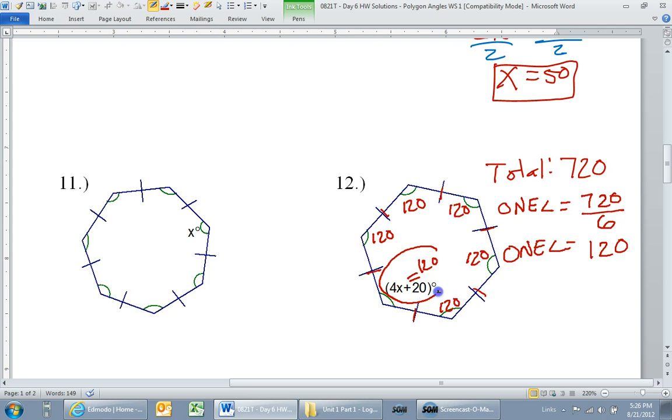Focusing on that, that leads us to an equation. 4x plus 20 had better equal 120, because all the angles are 120. So that means 4x plus 20 should equal 120. And then, of course, we just solve it from there. Subtract 20 from both sides.